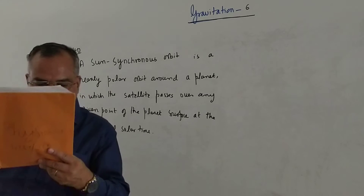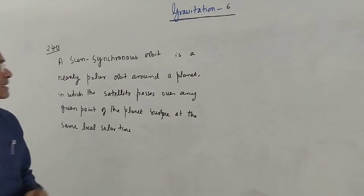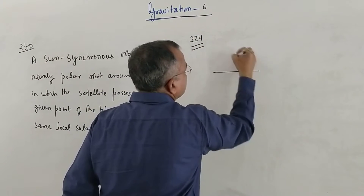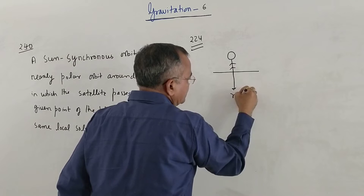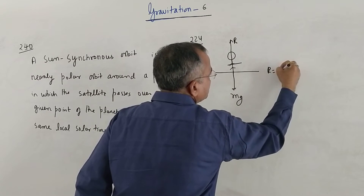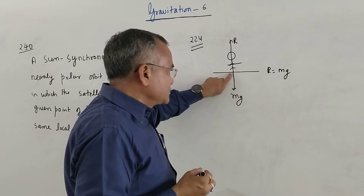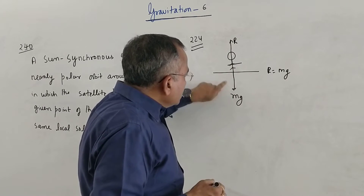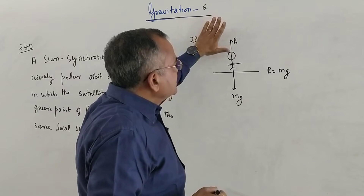For problem number 244: a person sitting in a satellite feels weightlessness. When a person is standing on the earth's surface, their weight acts in the vertically downward direction and the reaction is in the upward direction, equal to mg. The force exerted by the person on the floor is equal to mg, and the floor exerts an equal force mg upward on the person. So he gets the feeling of weight.